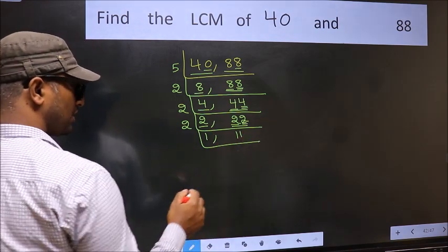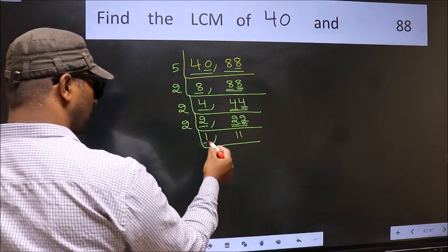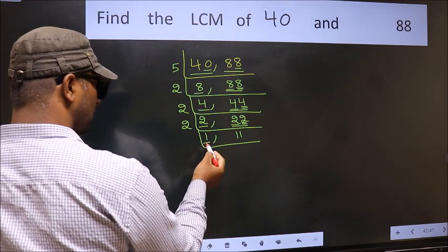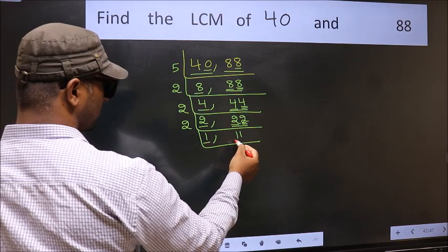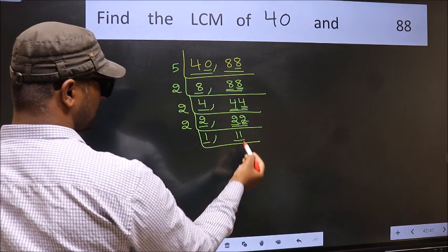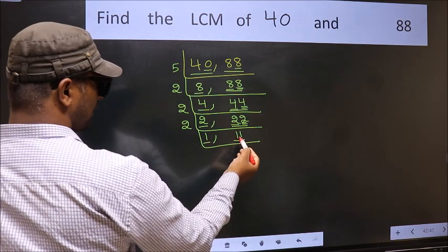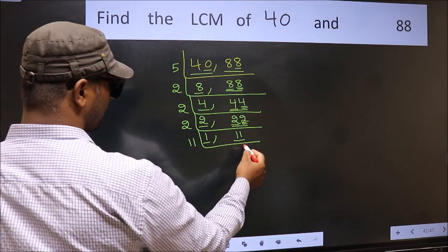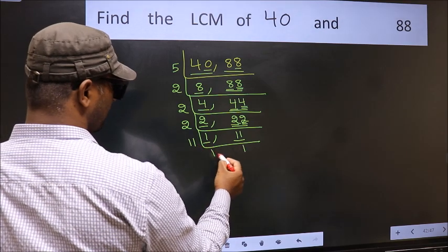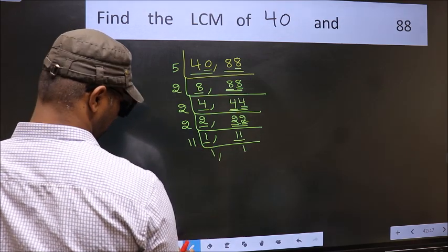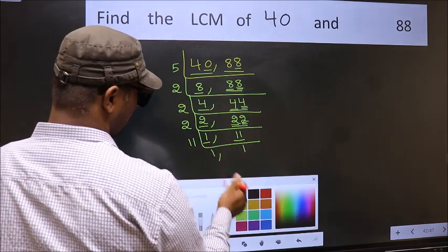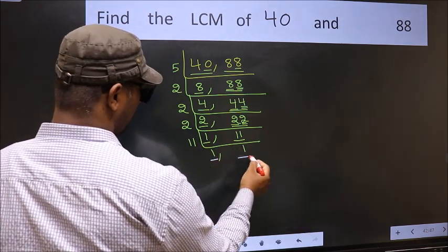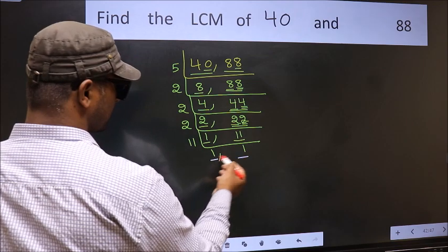Now we got 1 here, so focus on the other number 11. 11 is a prime number, so 11 ones are 11. So we got 1 in both places.